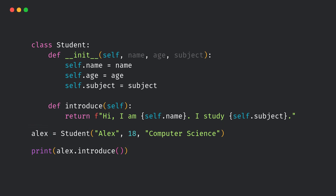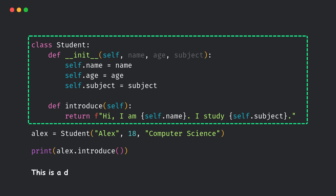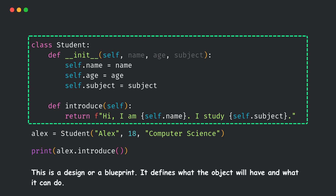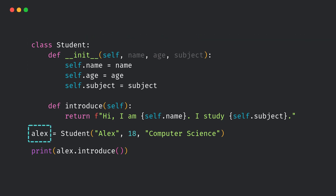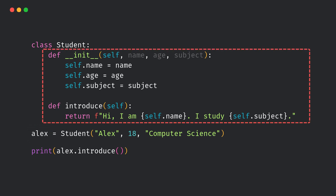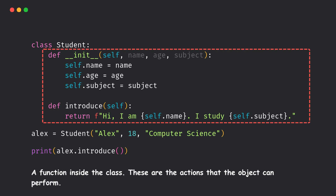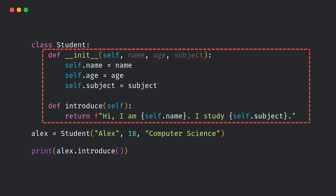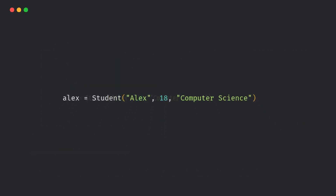Let's break down these terms clearly. Class: this is a design or a blueprint — it defines what the object will have and what it can do. Object: this is a real thing created from the class — it holds actual data and can perform actions. Method: a function inside the class — these are the actions that the object can perform. These three things together form the base of OOP.